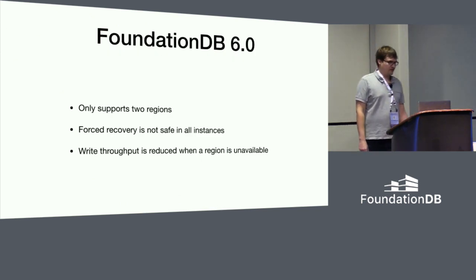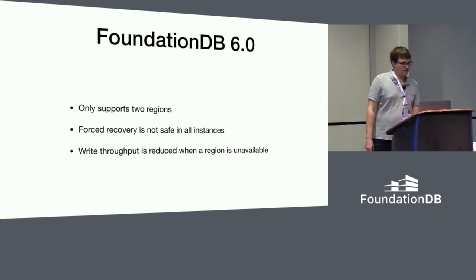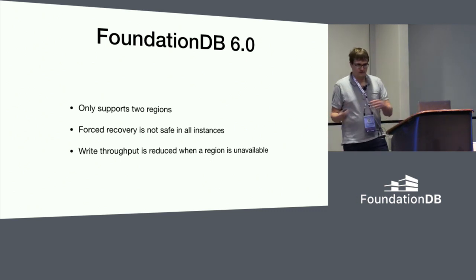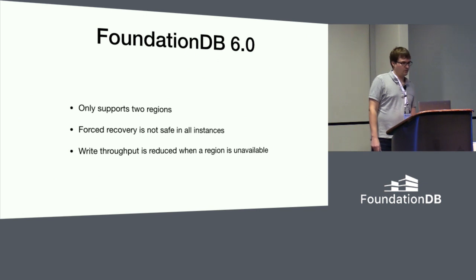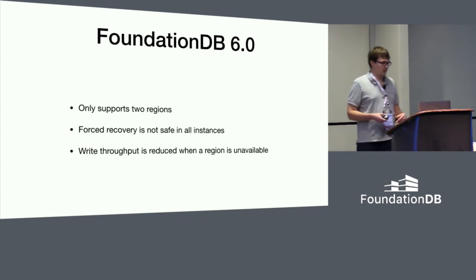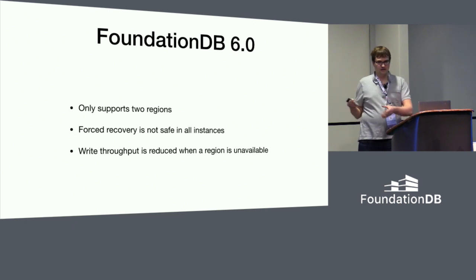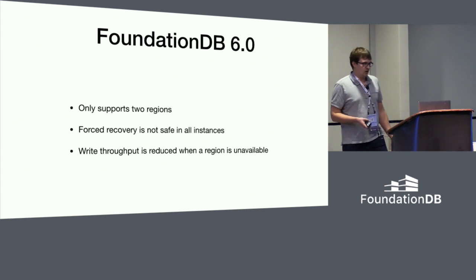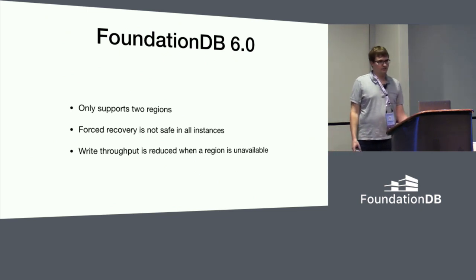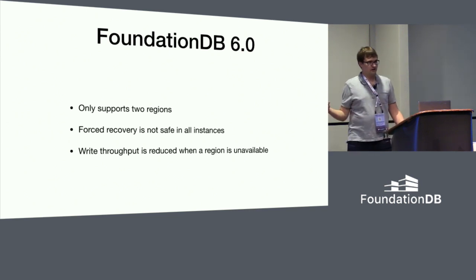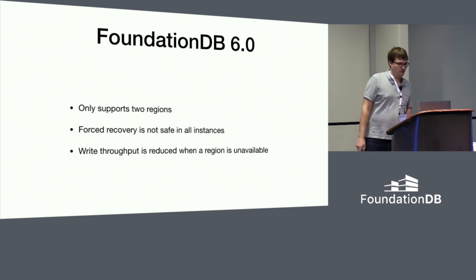So what's next? FoundationDB 6.0 has all of this working today — it can fail over to one region and fail back to another. However, there's still some work to go. The current implementation only supports two regions. I mentioned at the very start that one reason you'd want this feature is to do local reads in different places, and because we only have two-region support, it's not quite there yet for reading from many different places — we're hoping to get there. Also, even though we think the availability zones and regions tradeoff is good for log replication, you might not care about a 40-millisecond commit latency and might want to synchronously replicate those logs across the network instead. That will probably come in the next release.